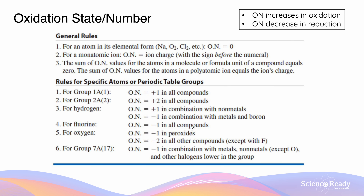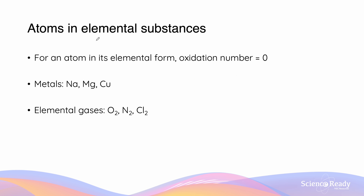There are a set of rules which you have to memorize to help calculate the oxidation number of a particular chemical species before and after a reaction. The first general rule says that atoms that are in the elemental form are going to have an oxidation number of zero. This means that all atoms in the elemental form have an oxidation number of zero. Examples of metals include neutral sodium, magnesium, and copper.